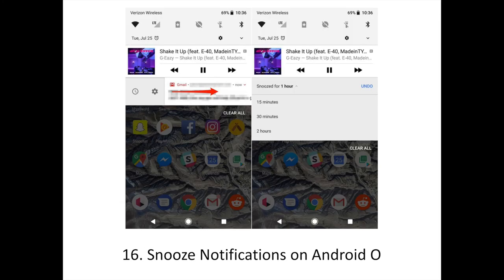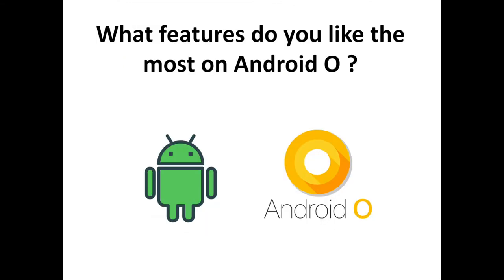With Android O you can snooze notifications with a quick swipe and tap. If you have a text message or email you want to deal with later, swipe right on the notification until you see the clock icon, tap on the clock, select the amount of time you want to snooze it for, and then go back to what you were doing.